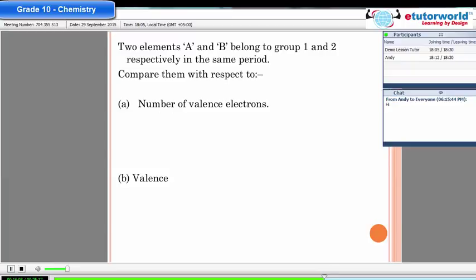So if you have an element A belongs to group 1 and B belongs to group 2. So A would be in group 1, the number of valency electrons would be 1, right? Yeah. And B belongs to group 2. So what will be the number of valency electrons here? 2. Good.